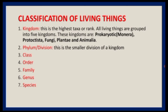The biggest and first taxon is the Kingdom. Biologists group all living things into five kingdoms: the Prokaryote or Monera, the Protoctista, the Fungi, Plantae, and Animalia.